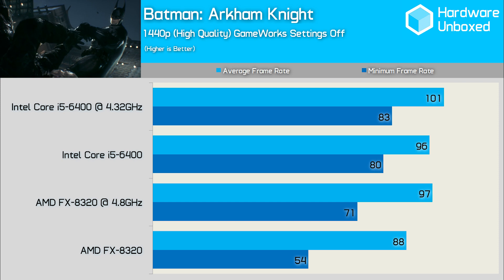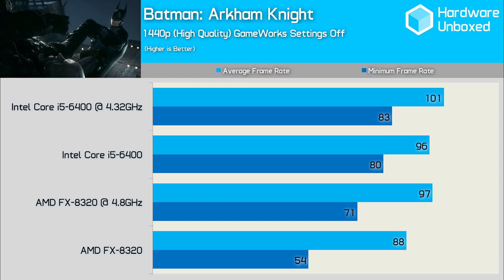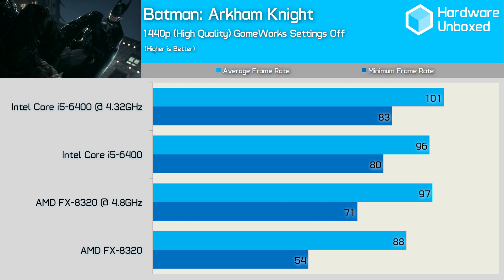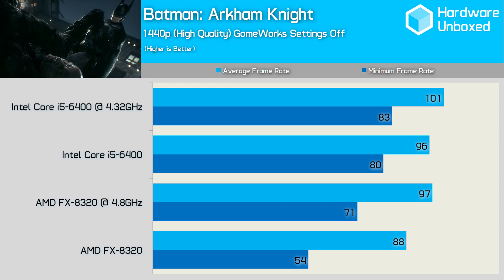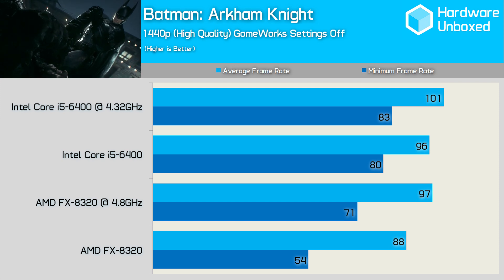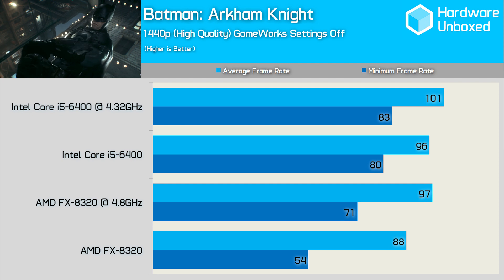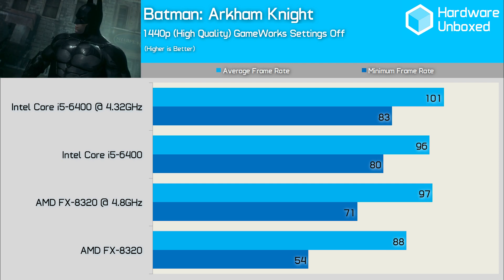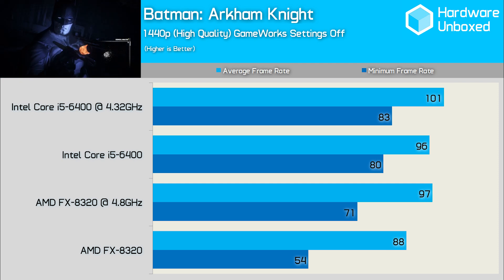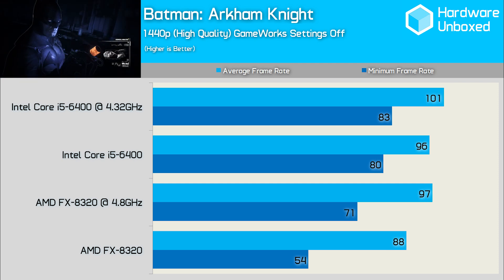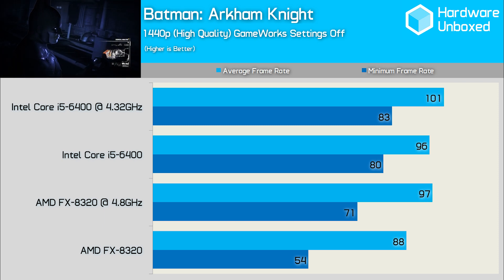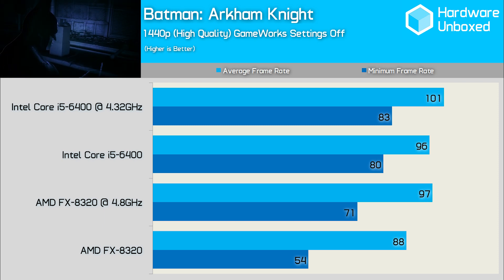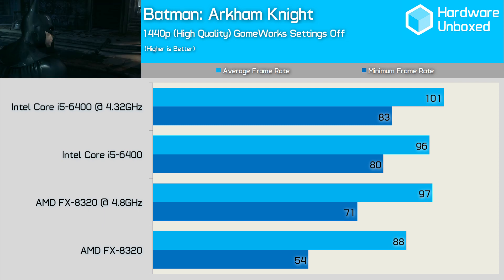Increasing the resolution to 1440p helps to minimise the performance margin between the 8320 and the 6400. The average frame rates are now quite similar, though the FX processor is still 33% slower out of the box when comparing the minimum frame rate, and a little over 10% slower once overclocked.